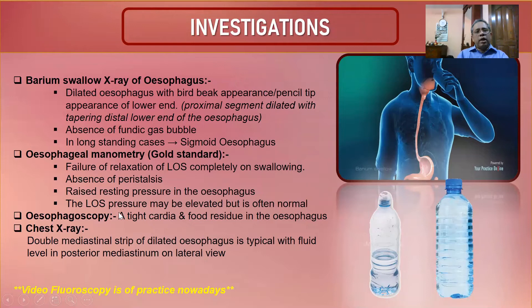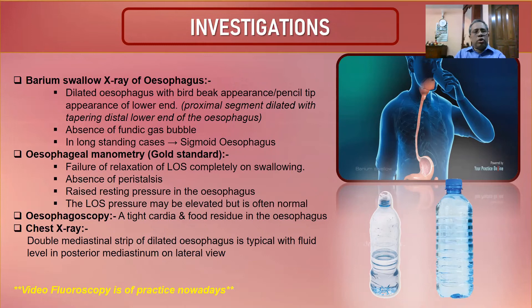On esophagoscopy, when the endoscope enters the esophagus it appears like entering a cave — a widely dilated lumen with residual food materials. After suctioning out the contents, the lower end of the esophagus is identified. The endoscopy findings are important and should be read carefully from textbooks.